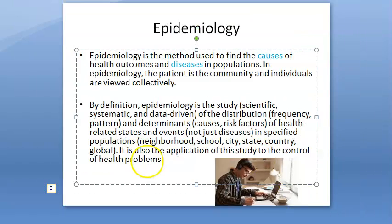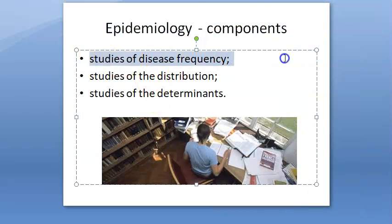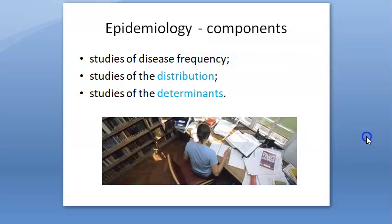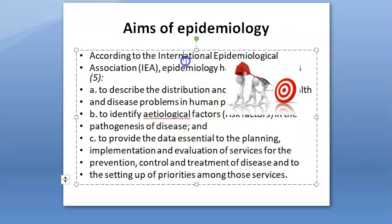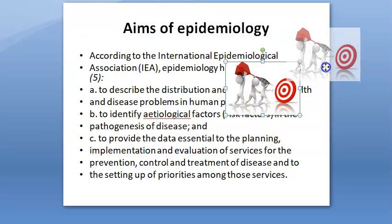The components of epidemiology are distribution and determinants — same two words. Distribution and determinants, and frequency comes under distribution only. That's what you write for components.